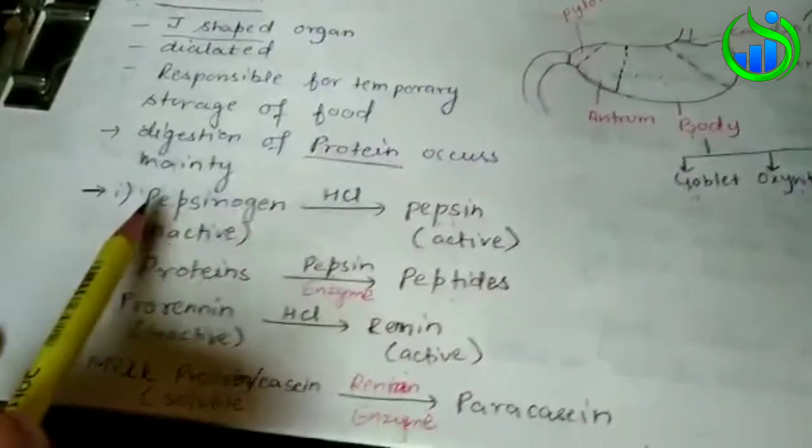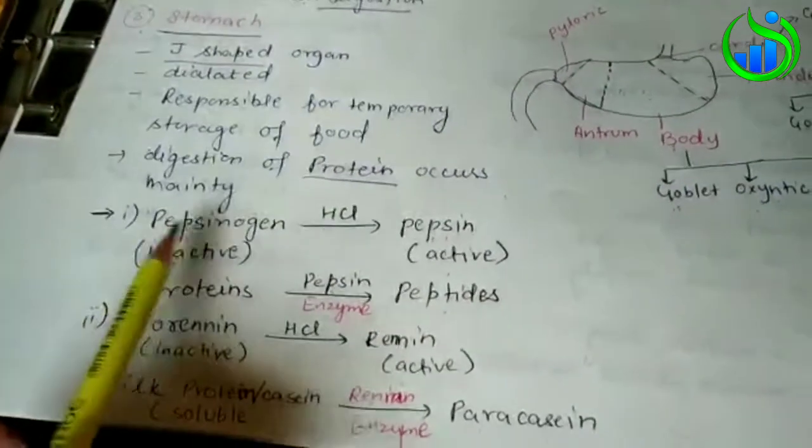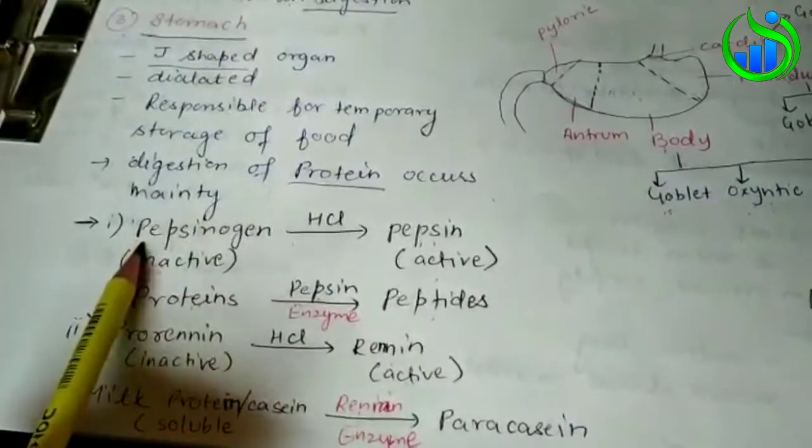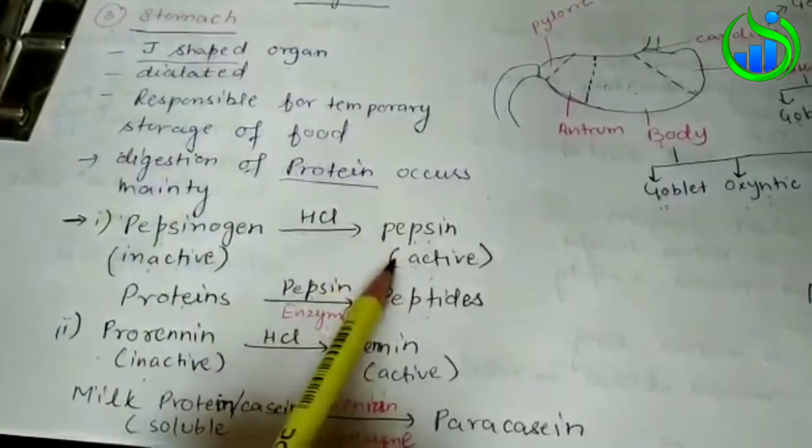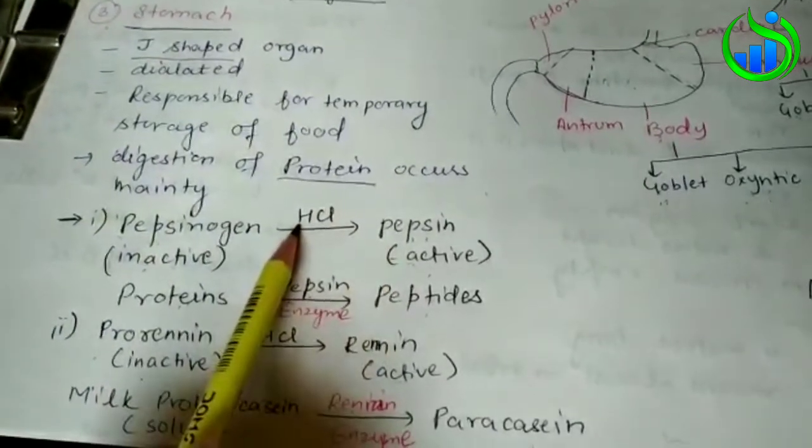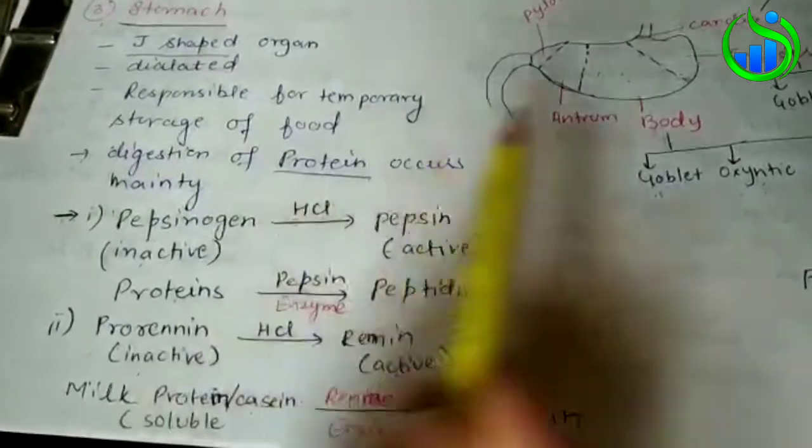This part produces pepsinogen. Pepsinogen is an inactive form and the active form is produced by HCl. HCl is produced in oxyntic cells.